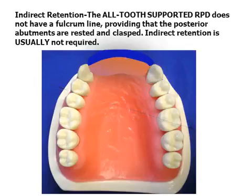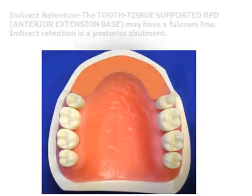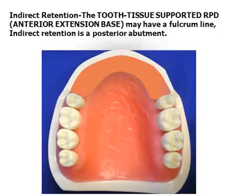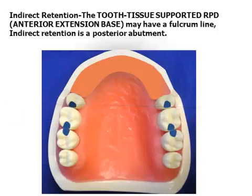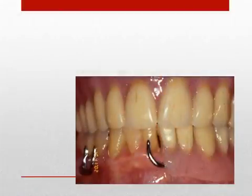The tooth-supported RPD does not have a fulcrum line, providing that the posterior abutments are rested and clasped, and indirect retention is usually not required. The tooth-tissue supported RPD may have a fulcrum line, and indirect retention is provided by a posterior abutment.